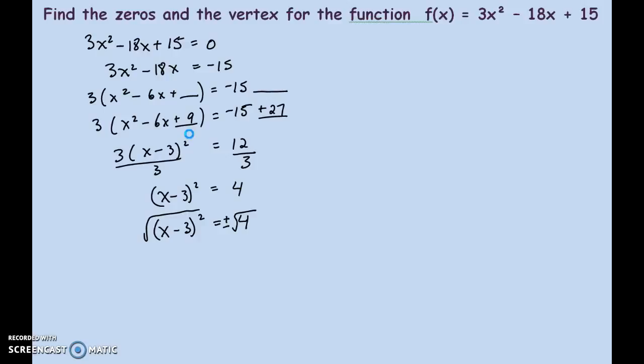The square root of x minus three squared is simply going to be x minus three. And then, square rooting the four with a plus or minus is going to be plus or minus two. Works out evenly. That's not going to happen every time. But the thing is, it'll always work. You'll be able to get an answer. It won't always be a nice square root.